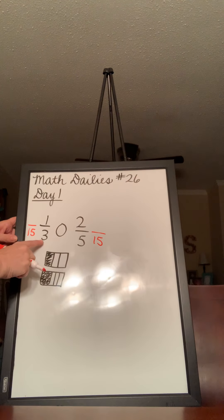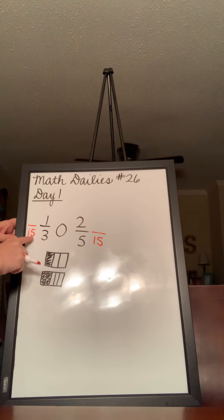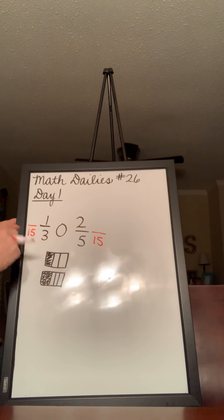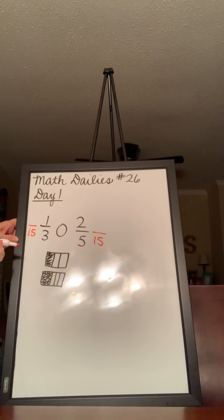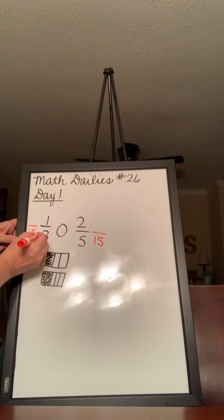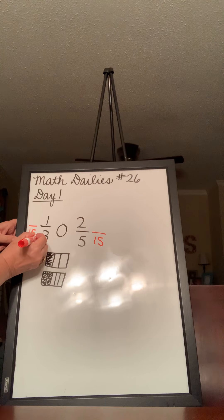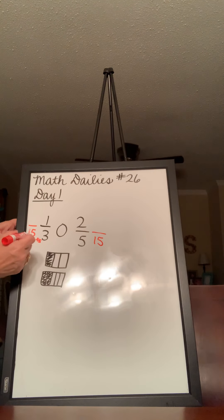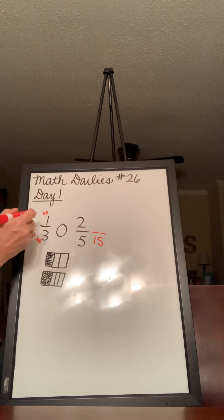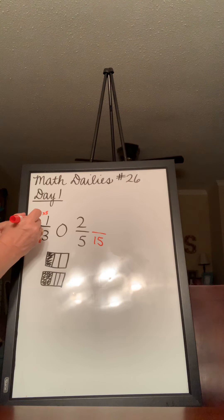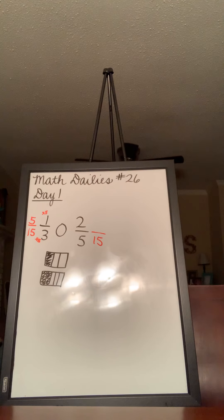Okay, now, the way we get 3 to 15, we have to multiply times what number? 3 times blank equals 15. Well, hopefully you said times 5. So, if we multiply the bottom times 5, we also have to multiply the top by 5. 1 times 5 is 5. So, another way to write 1/3 is 5/15.